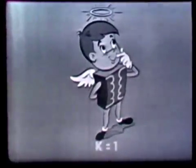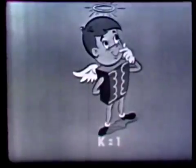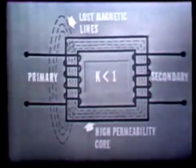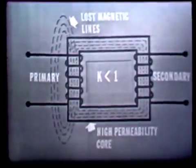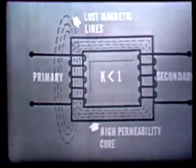If all of the magnetic lines produced by the primary coil of a transformer were to cut the secondary coil, the coefficient of coupling then would be 1. The coefficient of coupling for an ideal transformer is also 1. However, even with high permeability iron cores, a few of the magnetic lines fail to cut the secondary and are in effect lost. This prevents the coefficient of coupling from ever being exactly unity in a practical transformer. A coefficient of coupling of 0.98 is possible between the coils of a well-designed transformer.